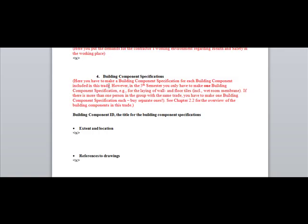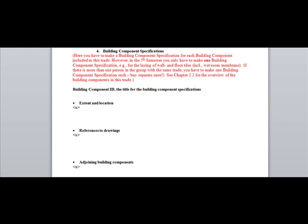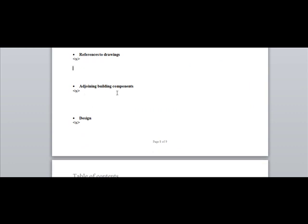That was just a summary. The actual building component specification is chapter four. When filling in chapter four, each student must make one building component specification relating to their detail design work. First, indicate where the component can be found — for example, between module lines, or on the north or south facade. Then provide the list of drawing references, and specify what adjoining building components relate to this particular component.